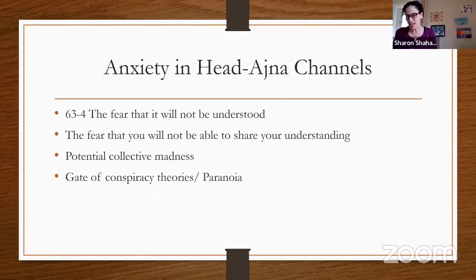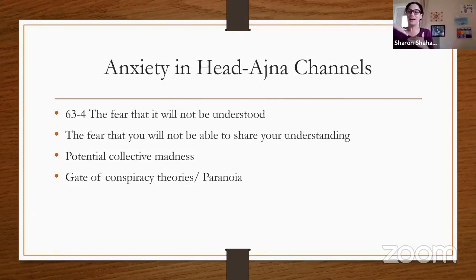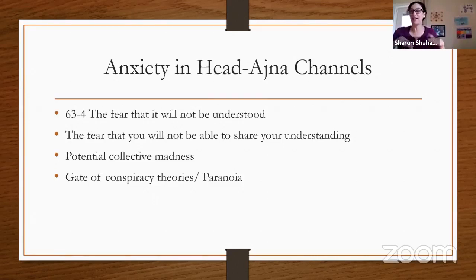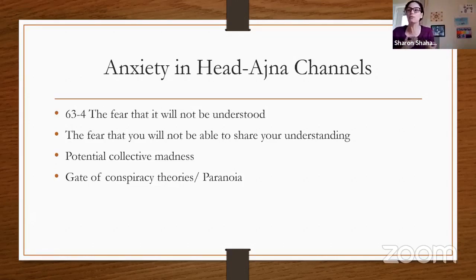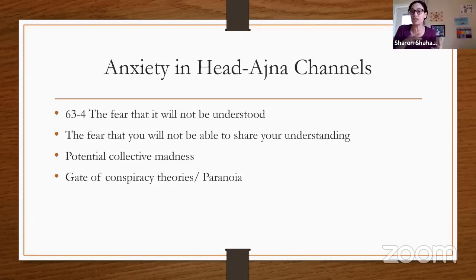Conspiracy theories are all about pointing out a pattern — 'the scientists all agree the pattern is this, but I'm suspicious of their intentions, so maybe there's an alternative pattern hidden beneath.' This is where doubt and suspicion can be very useful. As part of the process of logic, we need to push and pull on the logic — especially because the collective is interested in applying its logic on everybody.